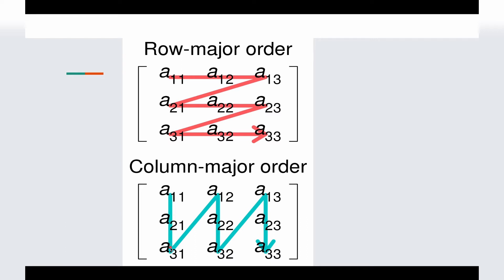So this means that for each particular column we are traversing all the rows. After the first column is completed we move to the second column and again traverse all the rows present in that column. Then we move to the third column and traverse the entire row for that column as well. This is how both these traversals are different.